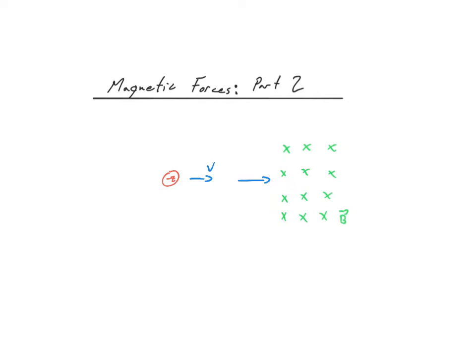So using my left hand here and pointing my left fingers in the direction of the velocity and curling my obviously deformed and strange looking left hand downwards, I see that the force on this particle is downwards.